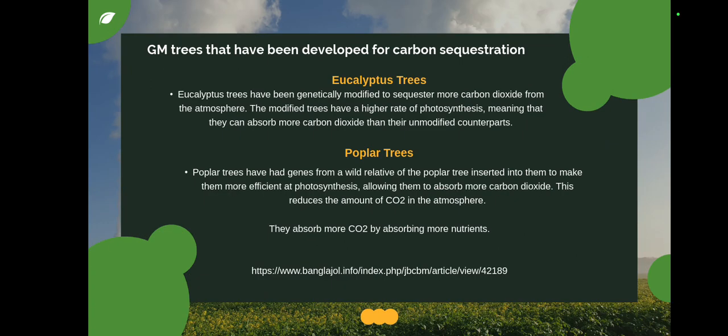Now we see about eucalyptus trees. Eucalyptus trees have also been genetically modified to sequester more carbon dioxide. Carbon sequestration is the process by which we hold and store carbon dioxide — more carbon sequestration means more holding of carbon dioxide. The modified eucalyptus trees have a higher rate of photosynthesis, meaning they can absorb more carbon dioxide than their unmodified counterparts.